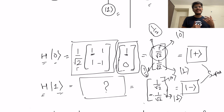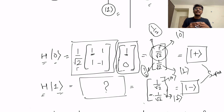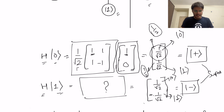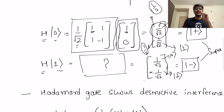A special property of the Hadamard gate is that it exhibits destructive interference. Interference can amplify different states to make a new state, or it can de-amplify states by subtracting them from each other. Destructive interference means different states with opposite properties will cancel out. The Hadamard gate shows this destructive interference on qubit states |0⟩ and |1⟩ in different scenarios.